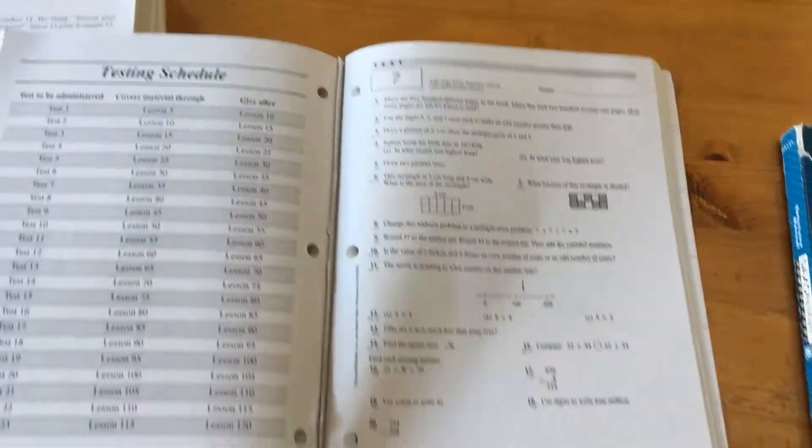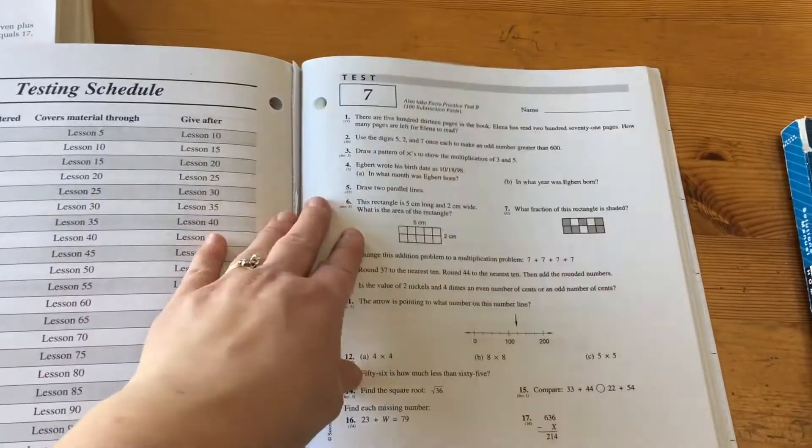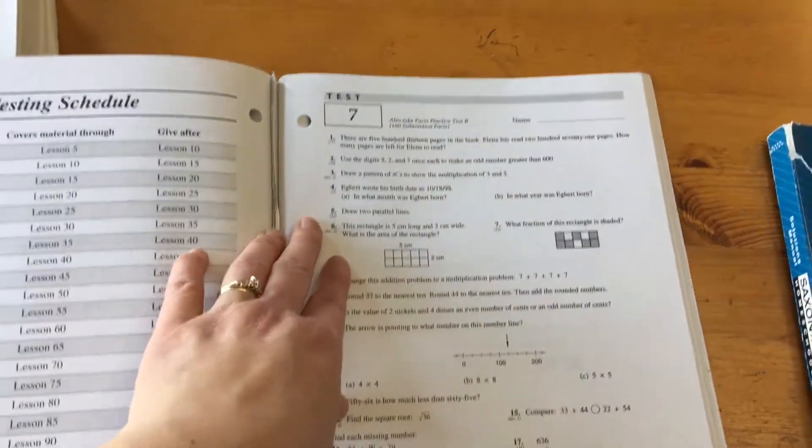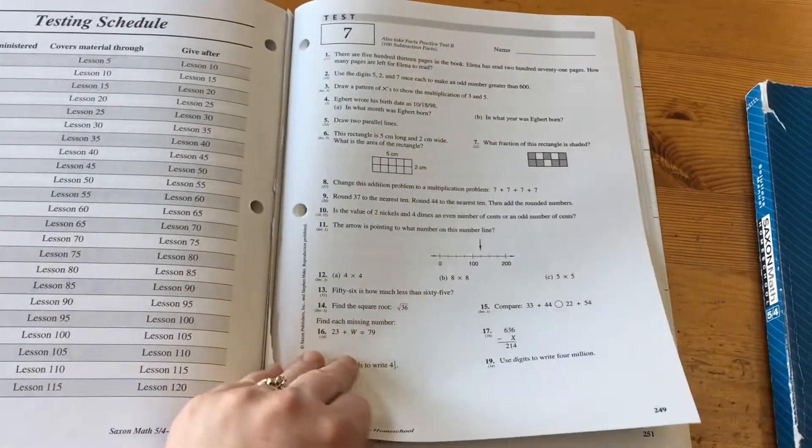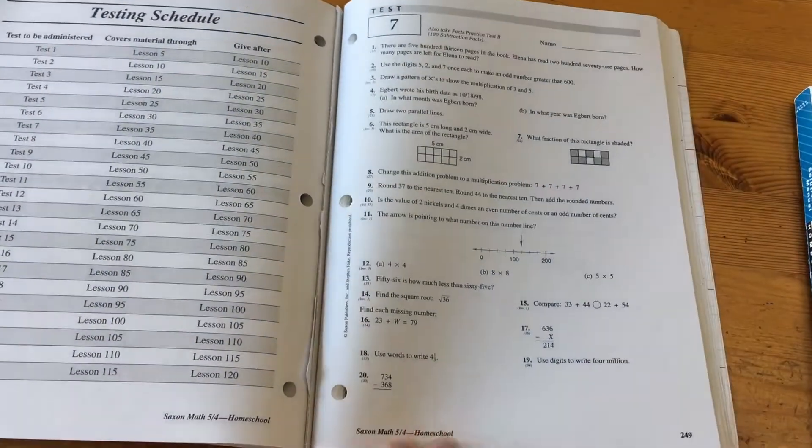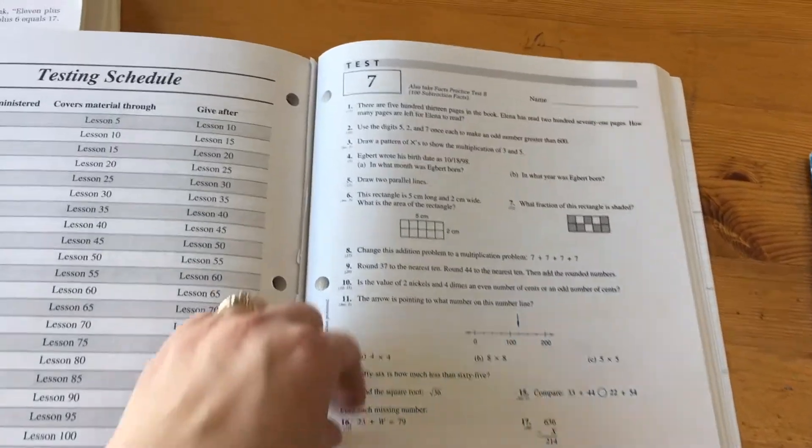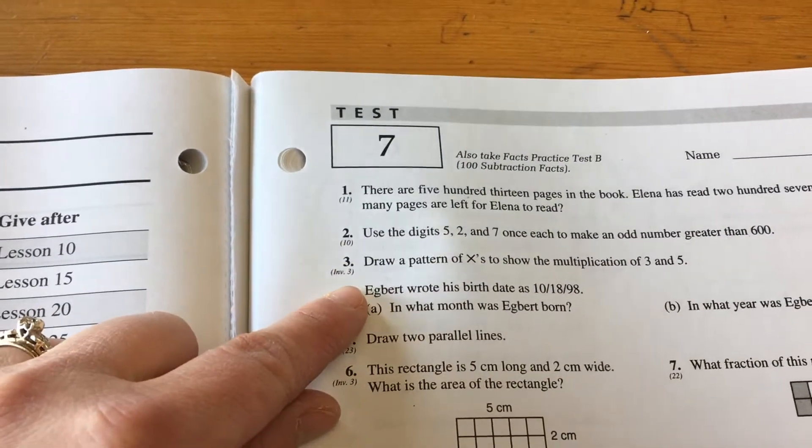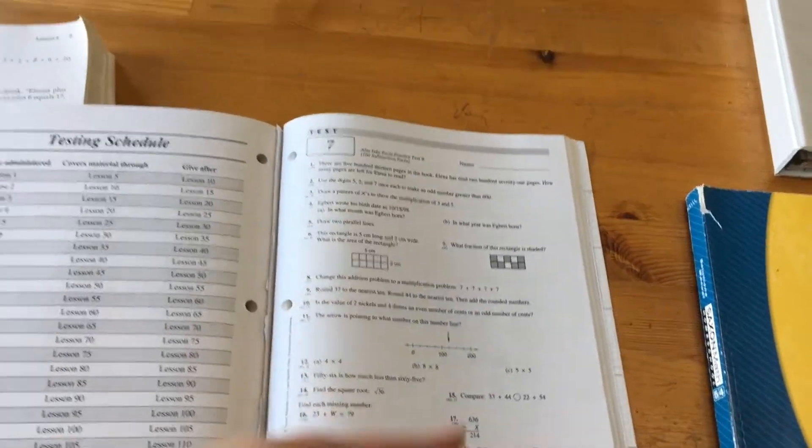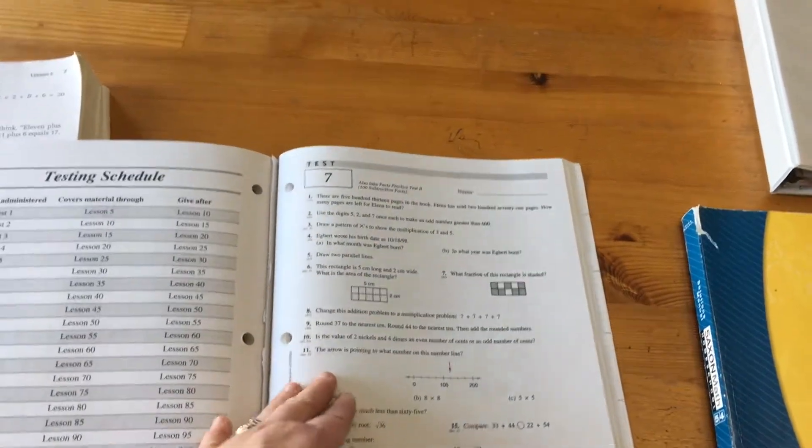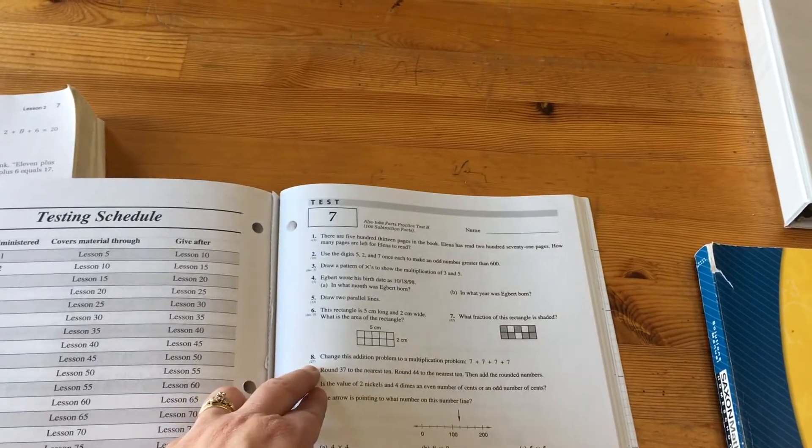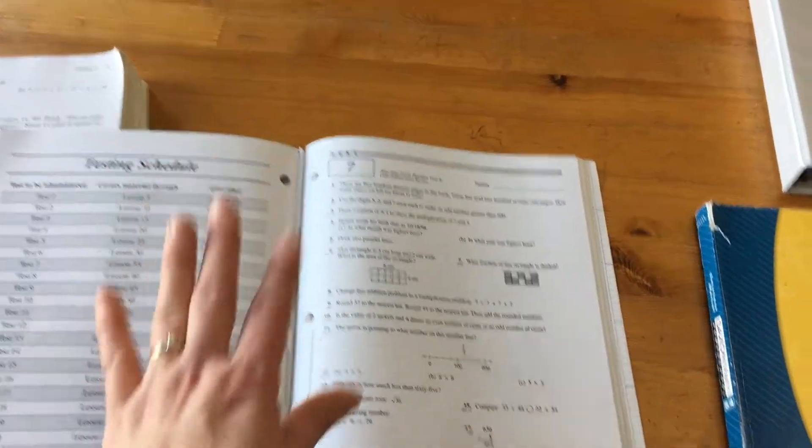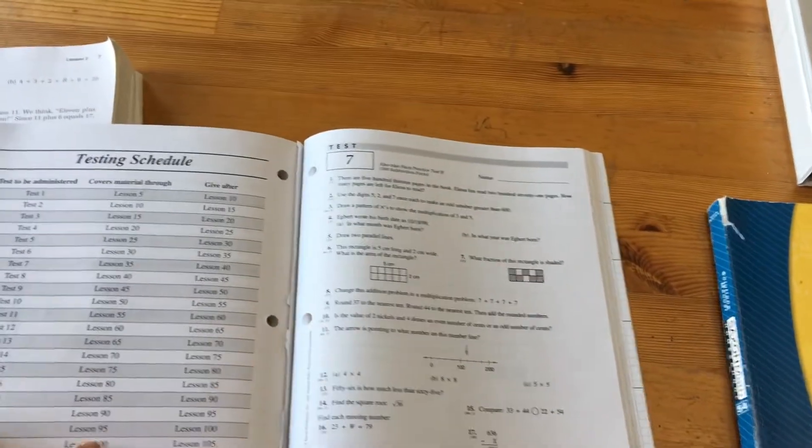So my son has done part of this one already. He's done up to test six. But one thing I did want to show you, the tests are usually single-sided, about 20 questions. And I really like under here, there's little numbers. And these are the lesson numbers that each of these questions deals with. So when my child gets one wrong, I can go back to that lesson and help him explain, I know exactly where it is. So that's one of the good things I really like about this.